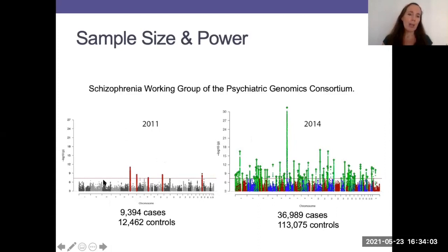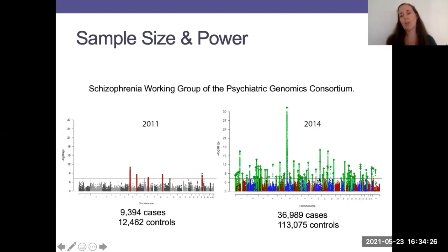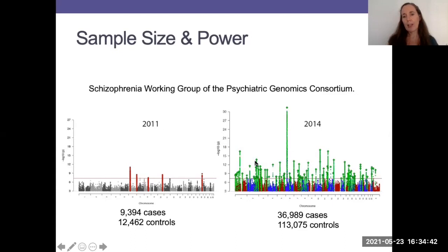With that 2011 paper, just a couple of loci cross the genome-wide significance threshold in the Manhattan plot. A couple of years later with a much bigger sample — nearly 37,000 cases and over 100,000 controls — we really start to see the genetic signal across the entire genome. With more samples in future years, the same pattern appears: you see these towers growing. With extra sample size, we expect more power and more precision in estimating the effect and the nature of that effect on the outcome.